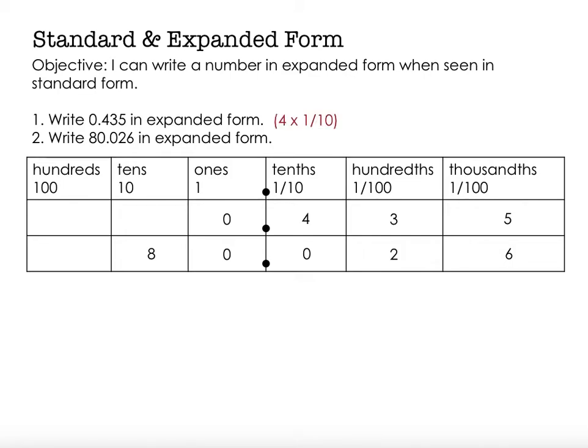So I'm going to do the same thing, except instead of writing decimal numbers, I write the fraction equivalent. So you can see I still have 4 times one-tenth or 4 in the tenths place, 3 in the hundredths place, 5 in the thousandths place. And that's what it would look like for 80 and 26 thousandths. An 8 in the tens place, a 2 in the hundredths place, and a 6 in the thousandths place.